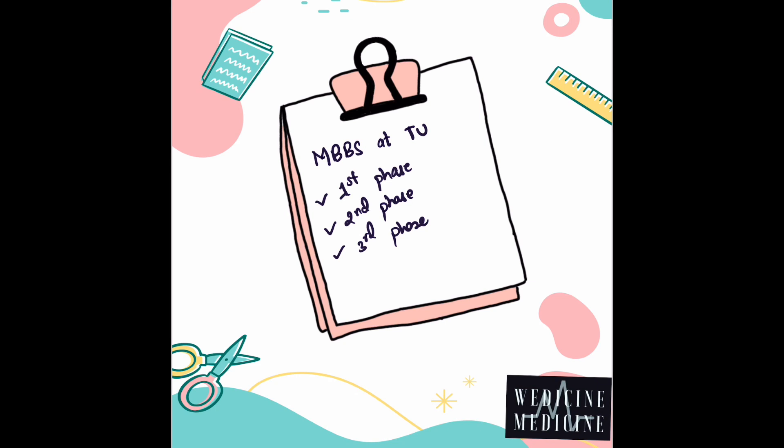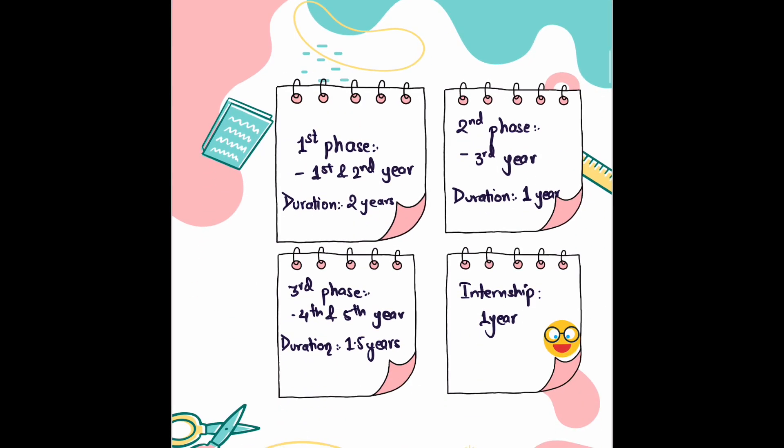MBBS at TU is divided into three phases: first phase, second phase, and third phase. The first phase covers years one and two. The second phase is year three. The third phase covers the fourth and fifth year, with a duration of 1.5 years, followed by a much-awaited internship of one year. The total official duration is 5.5 years.